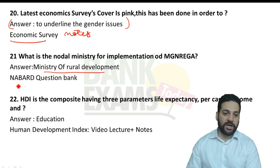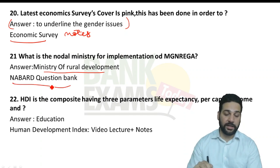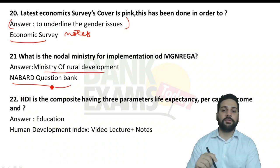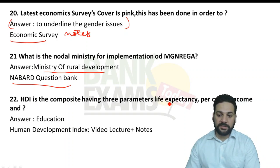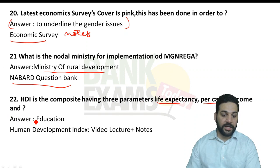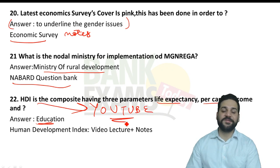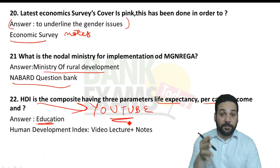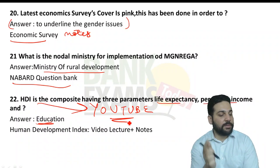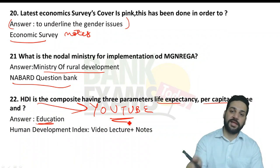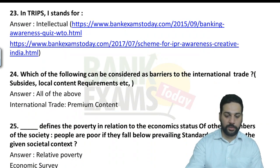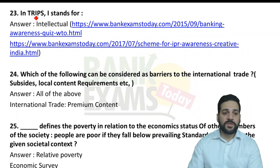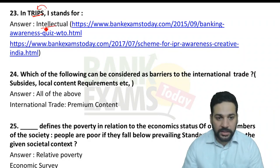HDI is a composite index with three parameters: life expectancy, per capita income, and education. This lecture was uploaded on YouTube as a demo lecture, and we're really happy that a question came from that demo. There was also a question about TRIPS — what 'I' stands for in TRIPS is 'Intellectual' — covered in GK Digest August 2017, and also covered back in 2015.